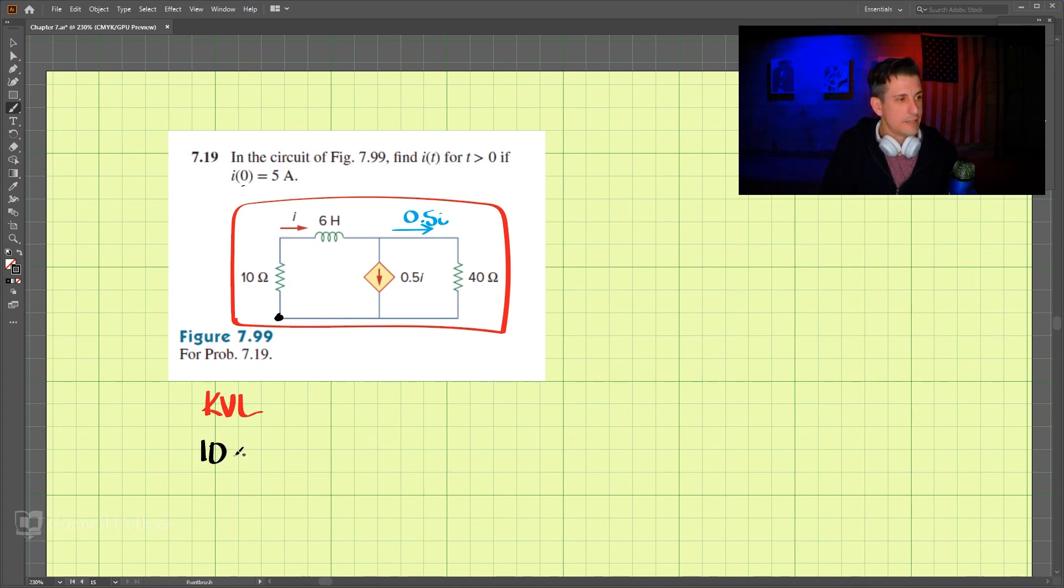We have 10 times I plus 6H, and remember that the voltage through an inductor is L dI/dt, right? So this is a voltage, and then we take L, which is 6 times dI/dt. So plus 6 dI/dt plus this 0.5I times this 40 ohm resistor is equal to 0. So this is KVL around the outside, where we put in this here is L dI/dt.